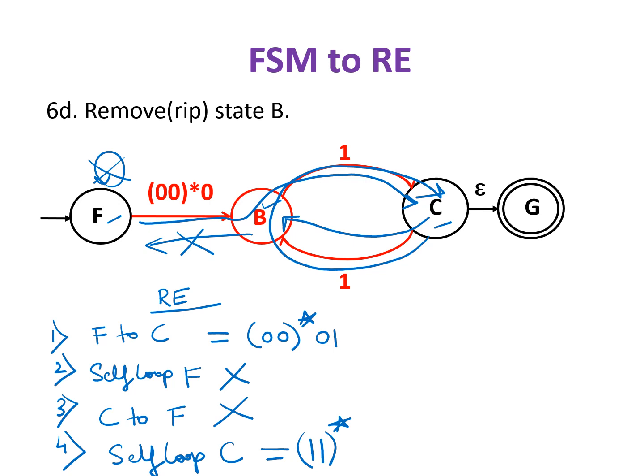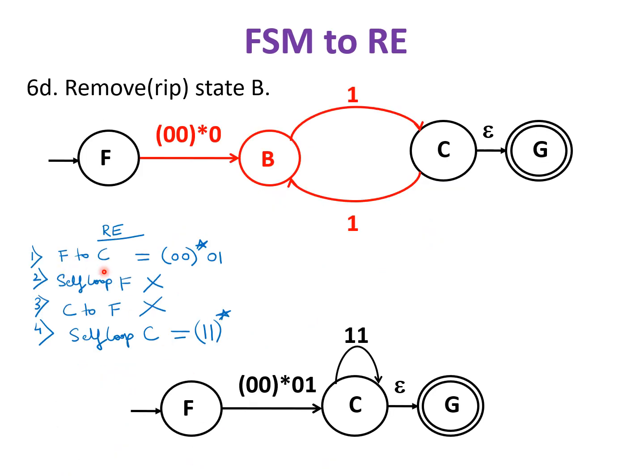Once we have obtained the regular expressions for all the 4 possibilities, then on eliminating B, we get the transition diagram as: From F to C, we have (00)*01. No self loop to F. No transition from C to F. And self loop for C is 11. So this is the transition diagram obtained after eliminating B.